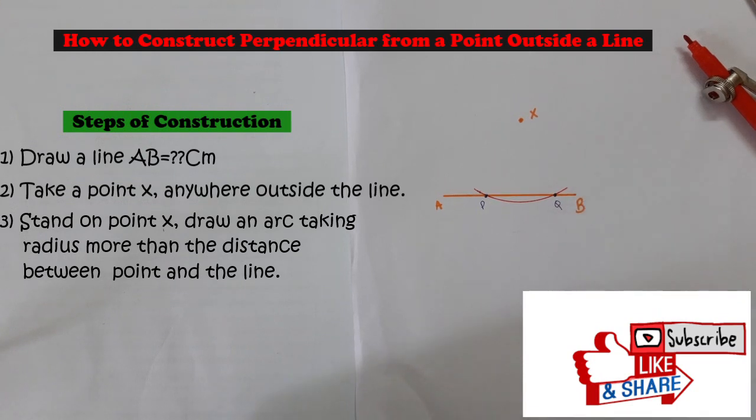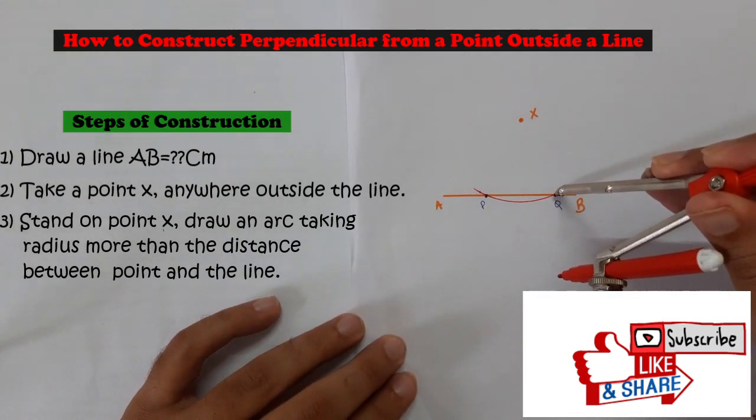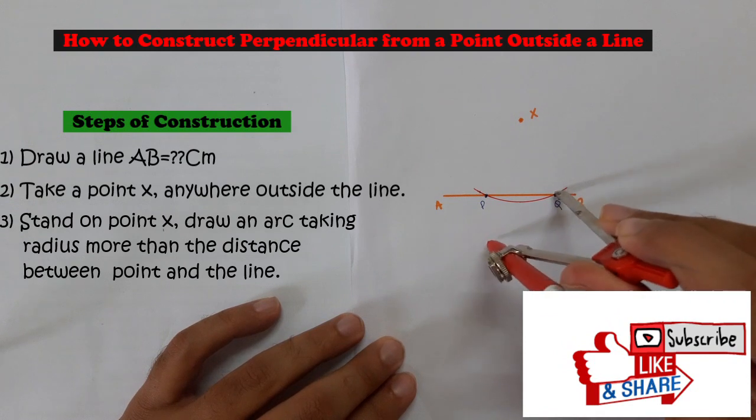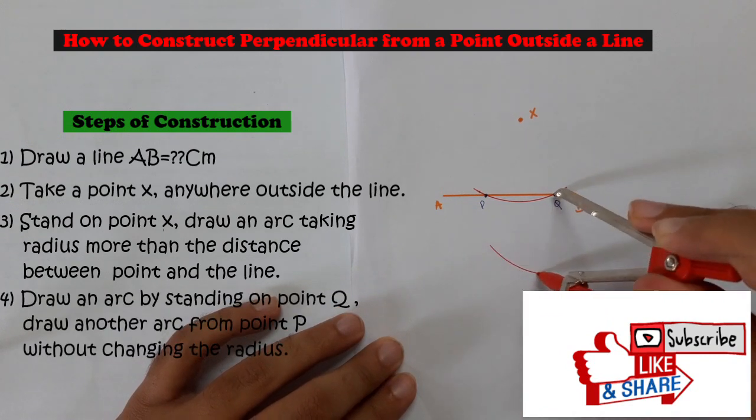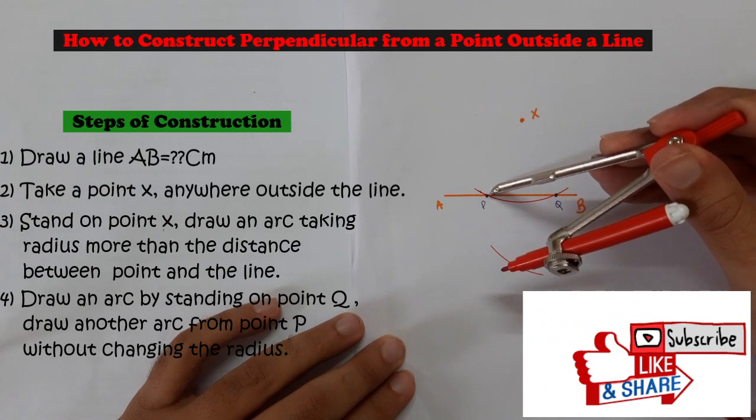So as you can see there will be two points. Let's say this point as P and this point as Q. So you may change the radius or may not. By standing on this point Q, draw an arc downside.